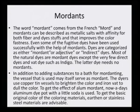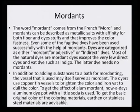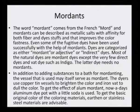The word mordant comes from the French word 'mord.' Mordants can be described as metallic salts with affinity for both fiber and dyestuffs, and they improve color fastness. Even some fugitive dyes have been used successfully with the help of mordants. Dyes are categorized as either mordant (adjective or indirect) dyes or direct dyes. Most natural dyes are mordant dyes, except for a few direct dyes and vat dyes like indigo, which need no mordants.